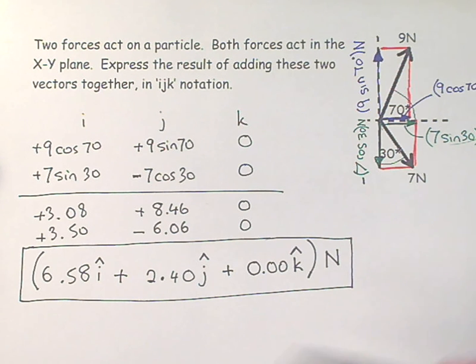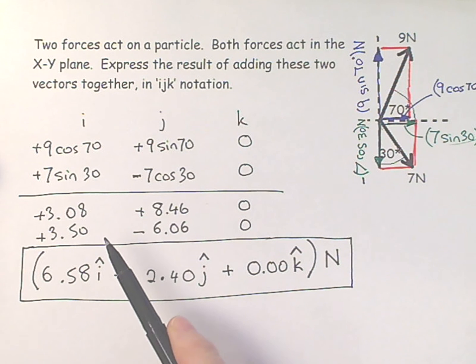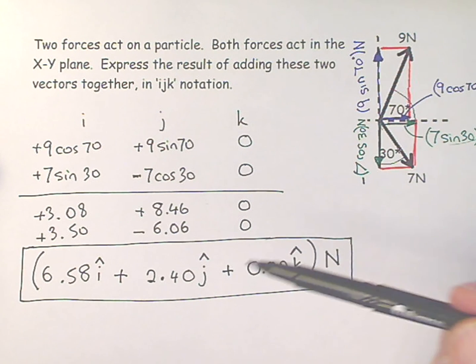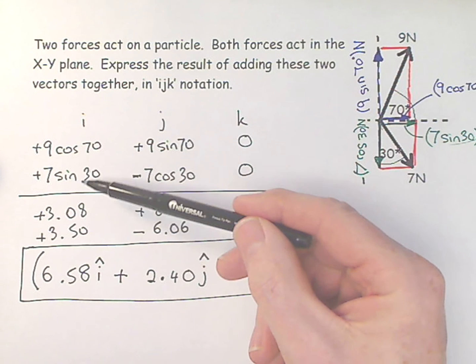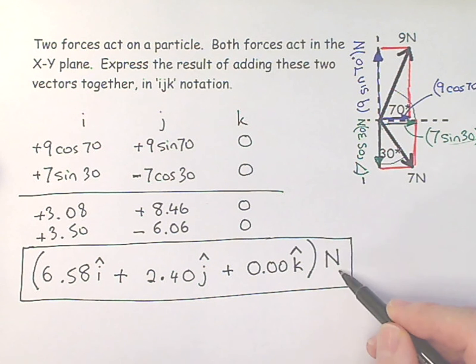So skills in this: there's being able to visualize breaking down a vector into components, and then there's the skill of being able to use the correct trigonometry to be able to get the right expressions for those components with the correct signs. And then the rest is arithmetic really, you're just basically adding up these numbers and then expressing it in a nice standard format, not forgetting the units at the end.